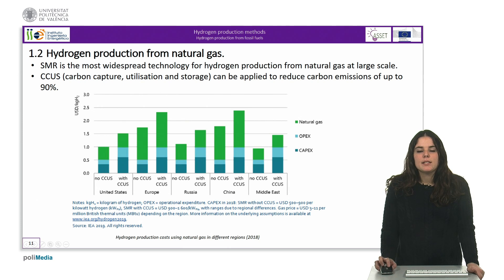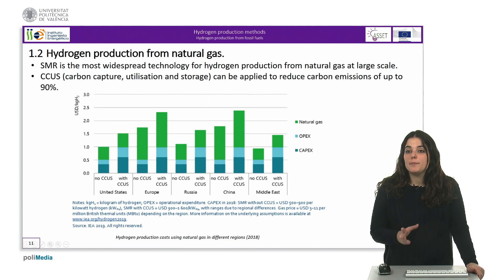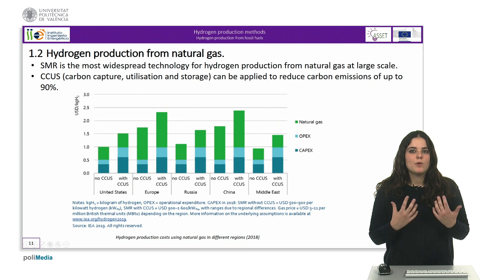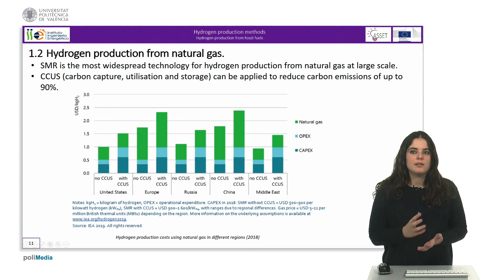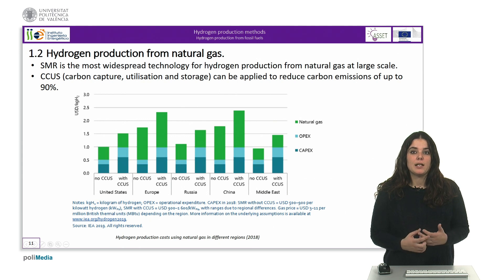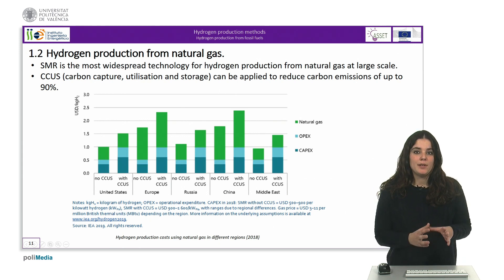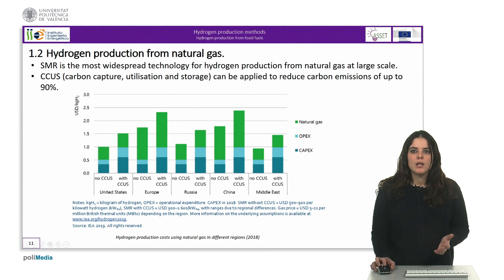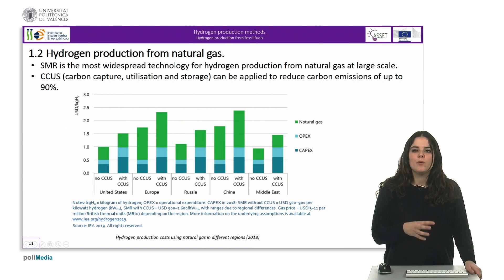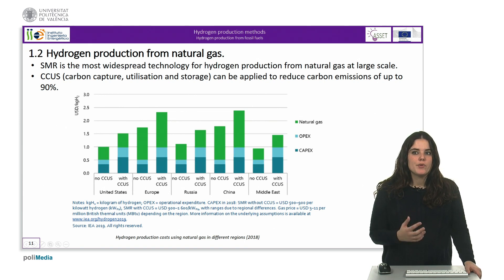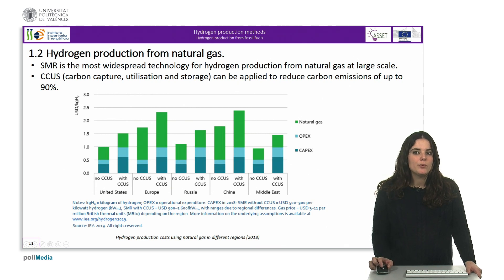To summarize, we can affirm that the steam methane reforming process is the most widespread technology at large scale because of its favorable economics and the large number of units in operation today. Autothermal reforming is also in use and carbon capture, utilization and storage can be applied to both methods, which can lead to a reduction in carbon emissions of up to 90% if applied to both process and energy emission streams.